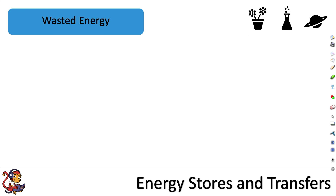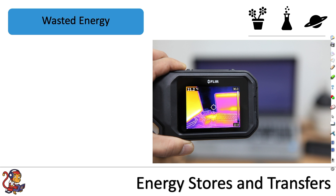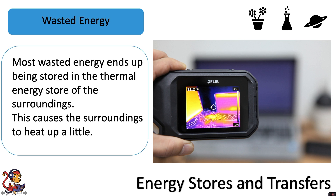During energy transfers between different stores — for example, chemical to thermal, as we saw when heating water on a stove — there can be wasted energy. This infrared camera shows the heat energy being transferred from a laptop and other electrical equipment. This heat energy is wasted energy; it's not needed for the appliance to work. Most wasted energy ends up being stored in the thermal energy store of the surroundings, causing the surroundings to heat up a little.